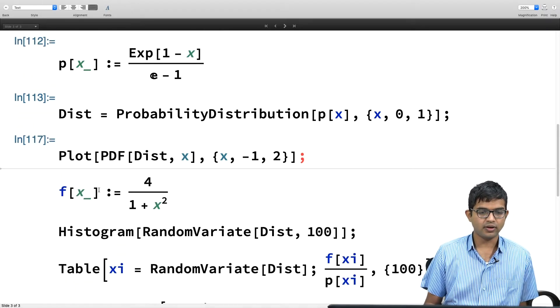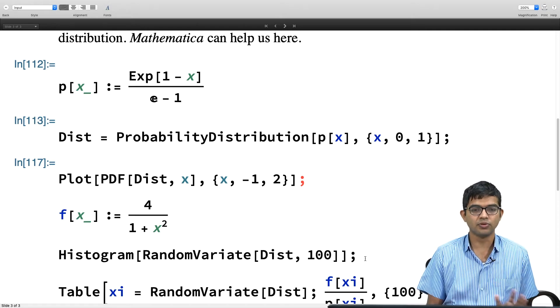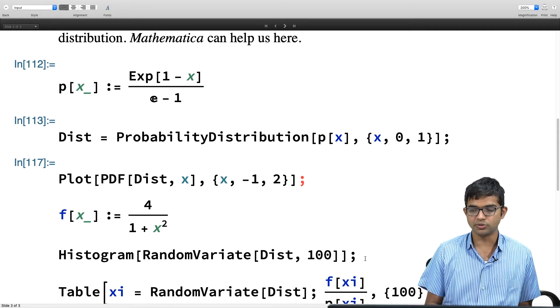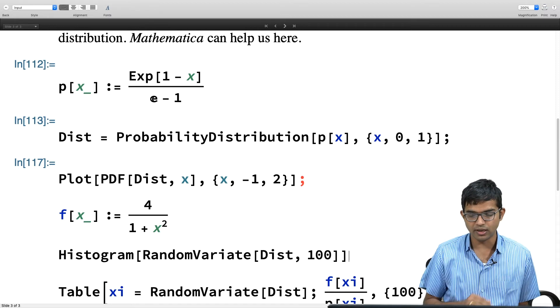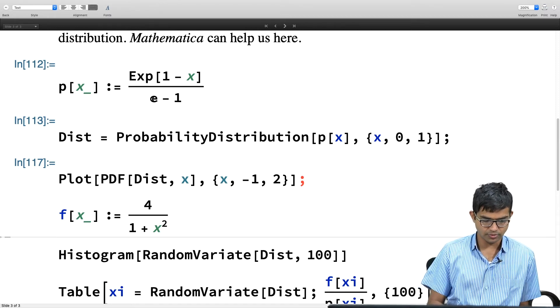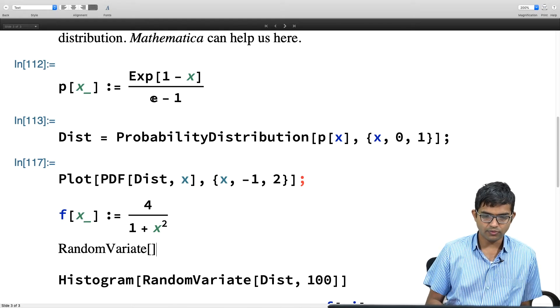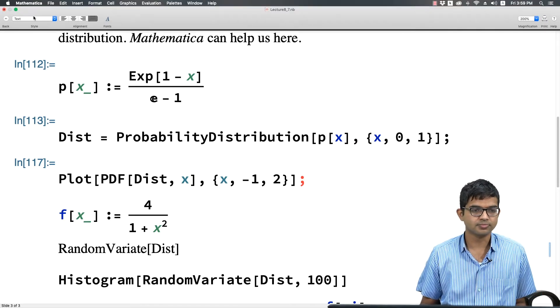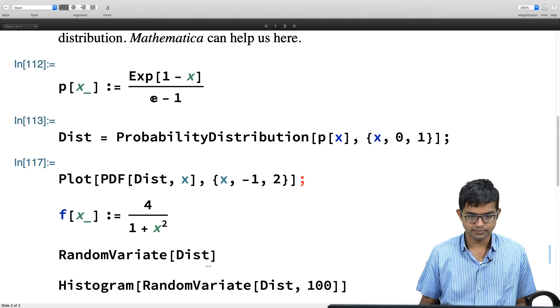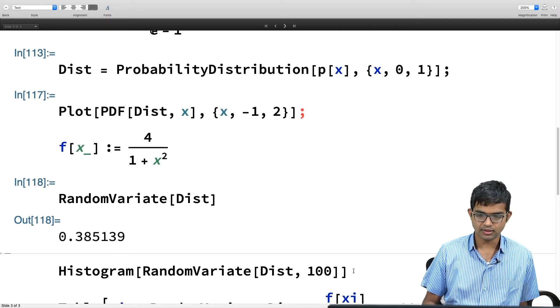You can use this dist, what I have called dist is a variable and you can draw random variables drawn from this distribution, just like we were doing from the uniform distribution using random real. Now I can draw random variables from this dist and the way to do that is to use a function called random variate. We will do that in a moment. But let us quickly check that Mathematica has understood what I am doing. You can do that by looking at pdf.